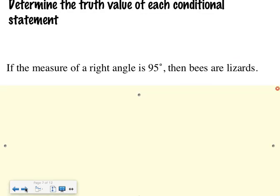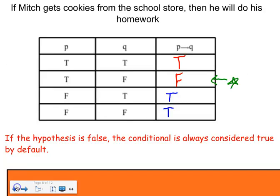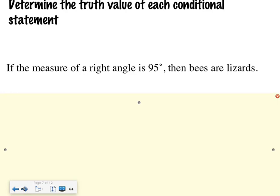Okay, let's try these. They're kind of goofy. It says, if the measure of a right angle is 95 degrees, then bees are lizards. Right? It's kind of out there. Jacob says true. Why is it true? Because the hypothesis is false. The measure of a right angle is 95 degrees. Is that true or false? False. And when I had a false conclusion, what was my truth table? True. So have this out when you do your homework. It will definitely help you. So we'll say true, because hypothesis was false.